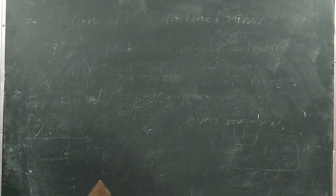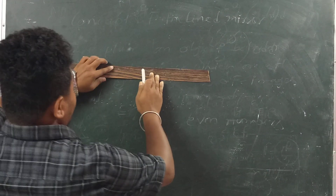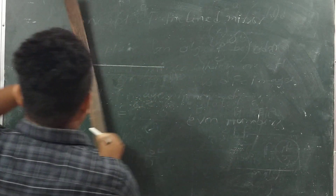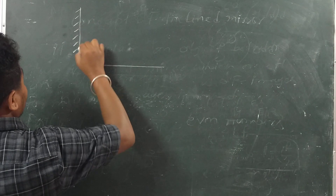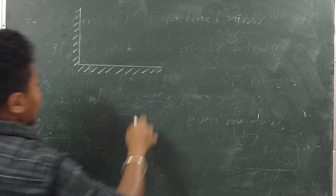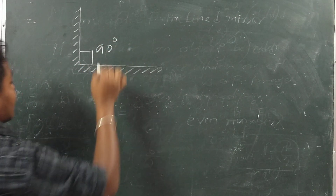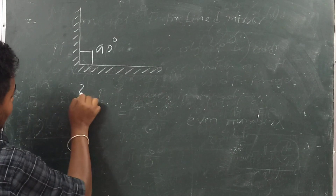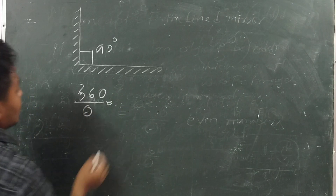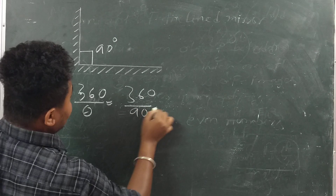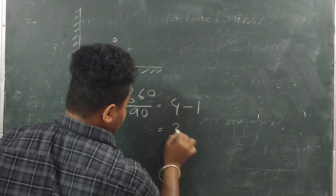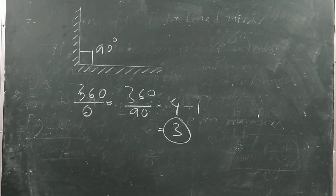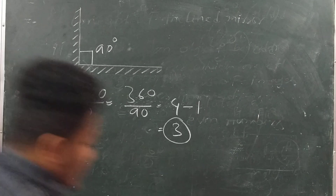Please remember these two formulas as they are very important for entrance examinations. For example, if two mirrors are inclined at 90 degrees, then 360 by 90 equals 4. Since 4 is an even number, the number of images formed is 4 minus 1, which equals 3.